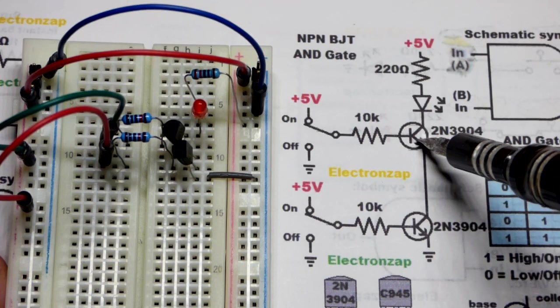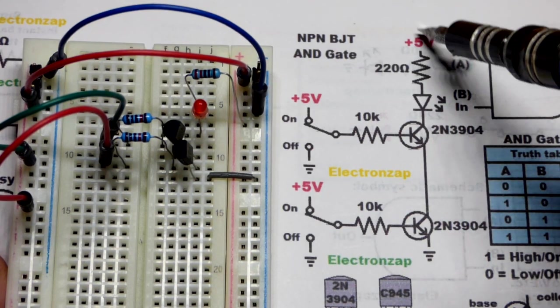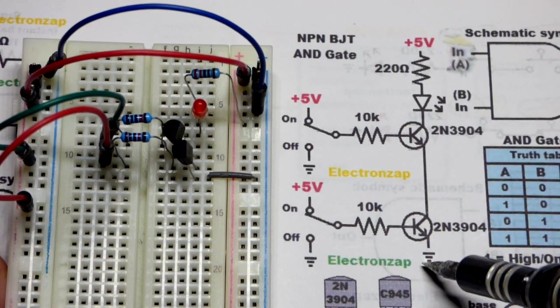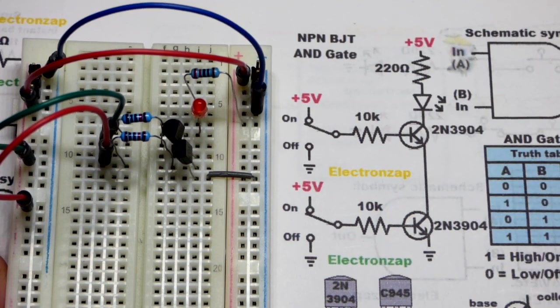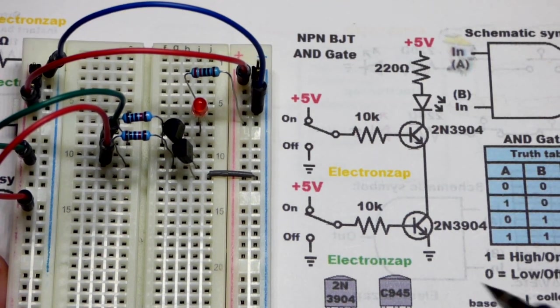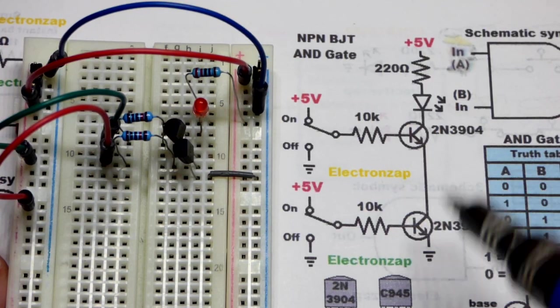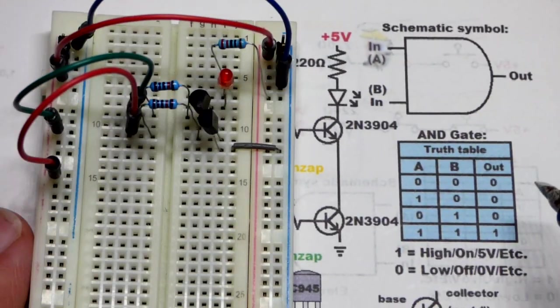And that little bit of current from base-to-emitter will allow many times the current to flow through there. Much more than what the load needs, so the load will set the current. Pretty straightforward. Main thing is, all transistors, two of them in this case, have to be on.